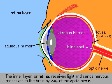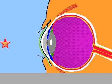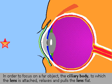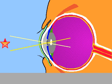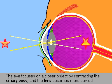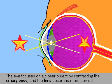The lens of the eye is elastic and its curvature can be changed by the ciliary body to focus on a particular object. To focus on a far object, the ciliary body relaxes and pulls the lens flat. To focus on a near object, the ciliary body contracts and the lens becomes more curved.